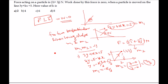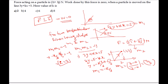Multiplying the two slopes and equating to −1: (−k/3) × (3/2) = −1, giving k = 2. So the answer is k = 2.